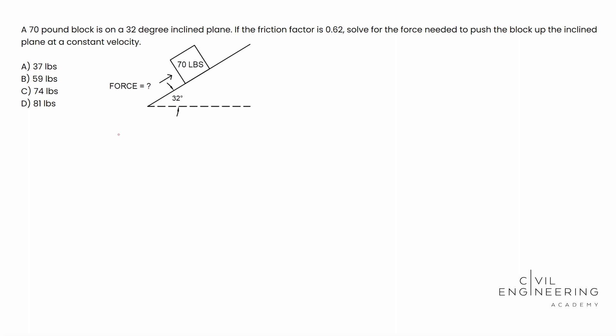This problem could be an FE problem or a breadth problem if you're taking the PE exam. Here's what the question says: A 70 pound block is on a 32 degree incline plane. If the friction factor is 0.62, solve the force needed to push the block up the incline plane at a constant velocity.